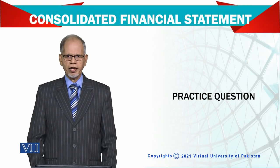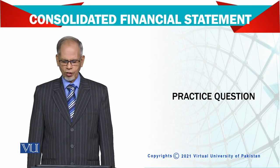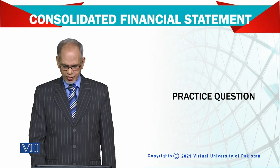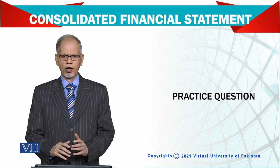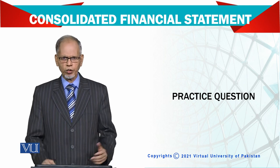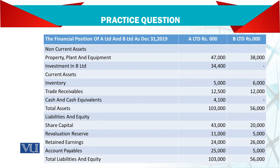Let's have a slightly difficult question on consolidation — difficult in the sense that it's a lengthy question. The financial position of A and B Limited on December 31st, 2019 is given.